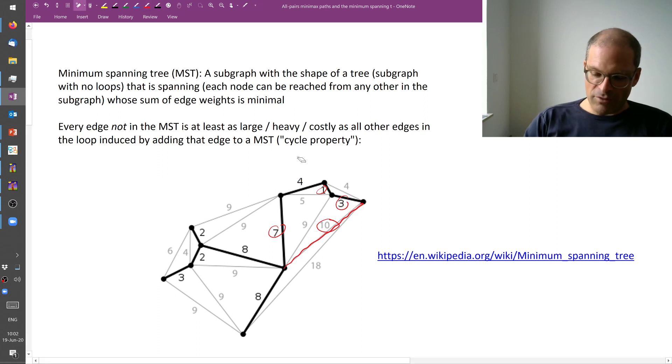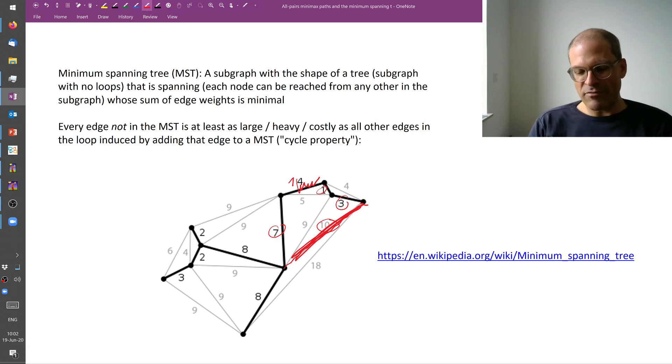Because if it were so, for example, if this edge here had a weight of 14 and not a 4, well, then it would have been cheaper to delete this edge and add this edge to my tree. And I would have a better solution. But we previously claimed that our minimum spanning tree was minimal. So it had a minimal sum of edge weights. And then this property also called cycle property always holds.